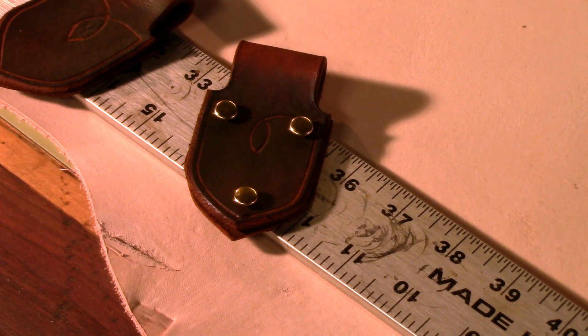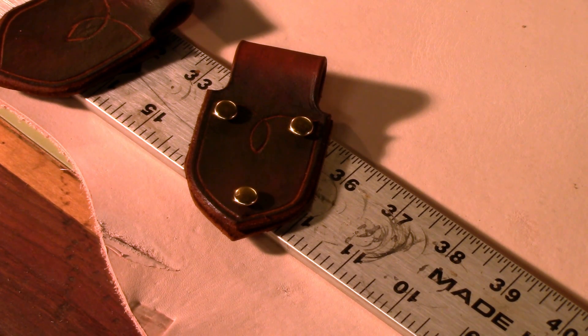Here's one of the mounts for the straps that are going to go on the side of the bag. I've just put the rivets there so you can see kind of where they're going to go.